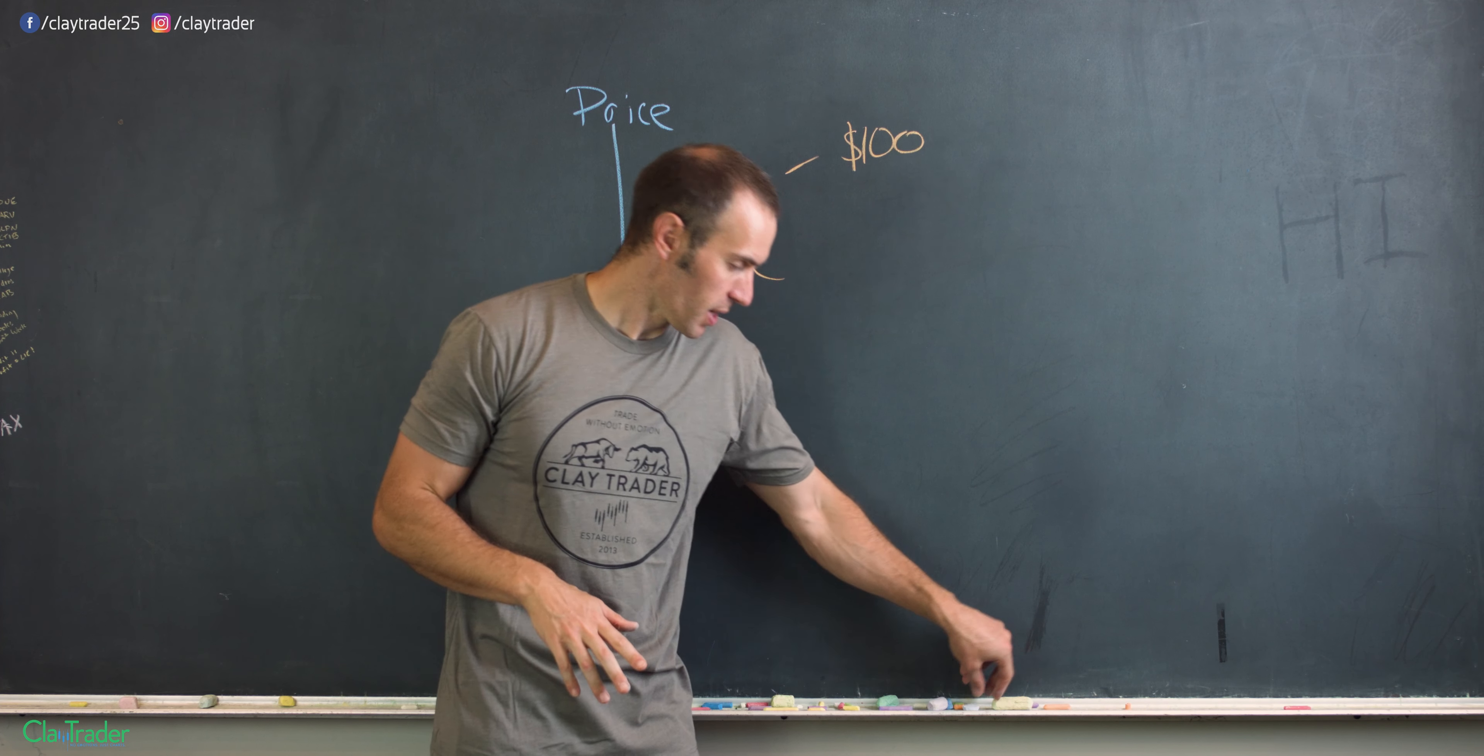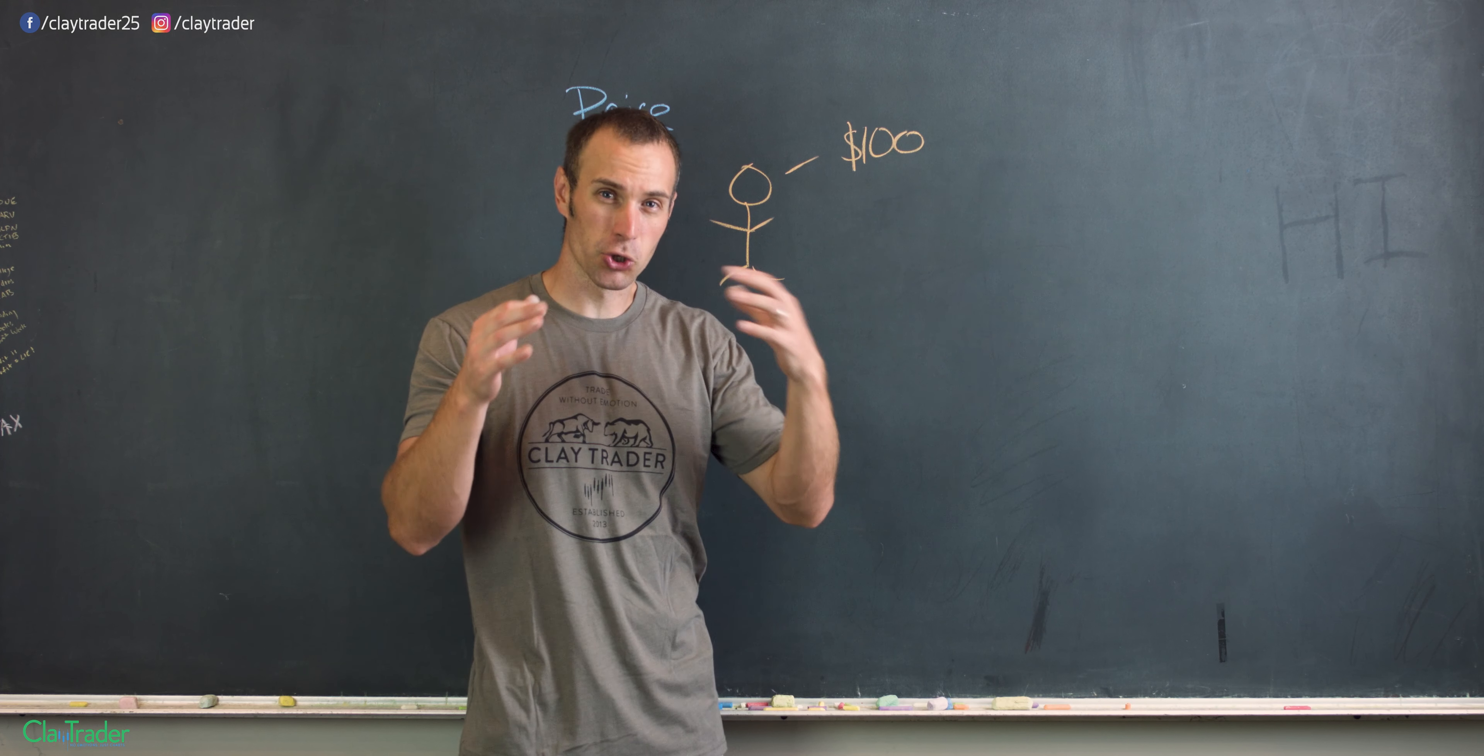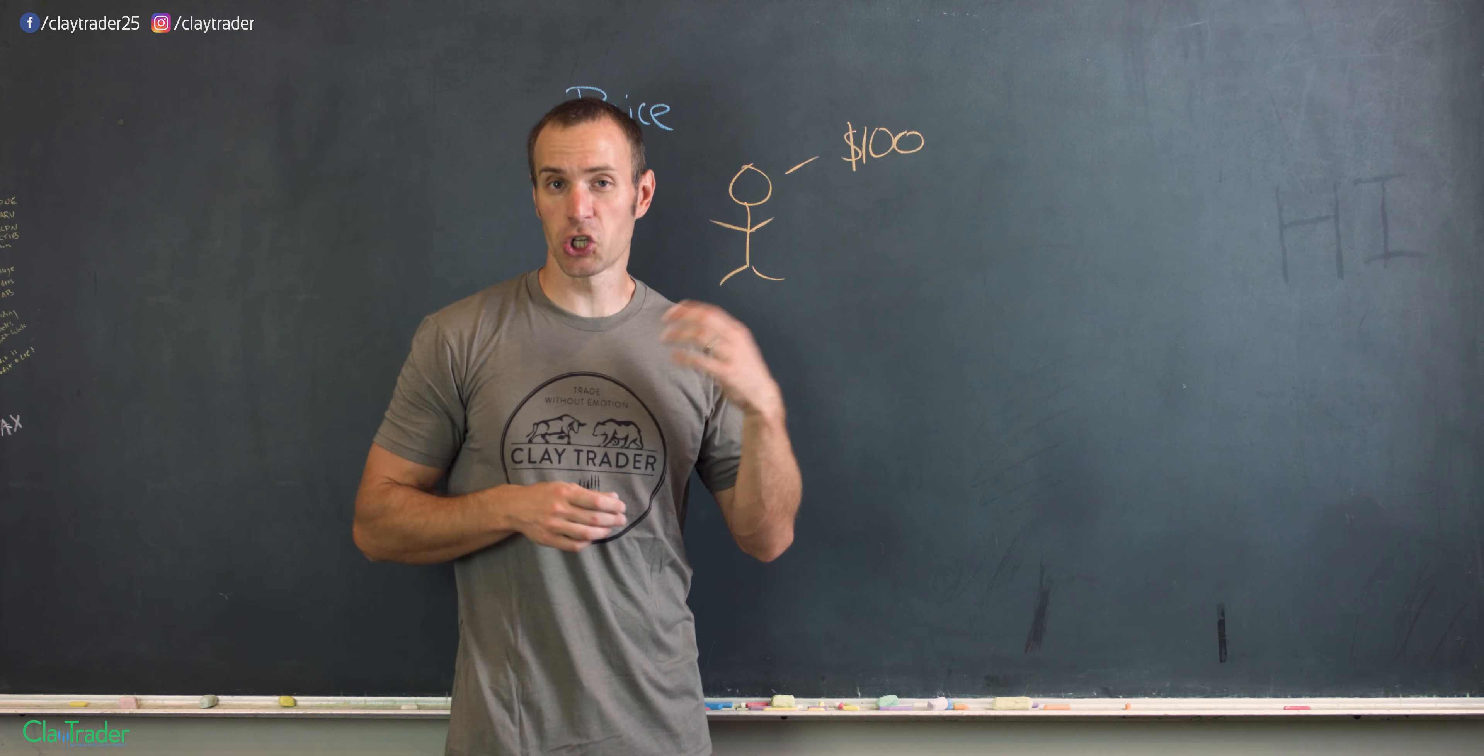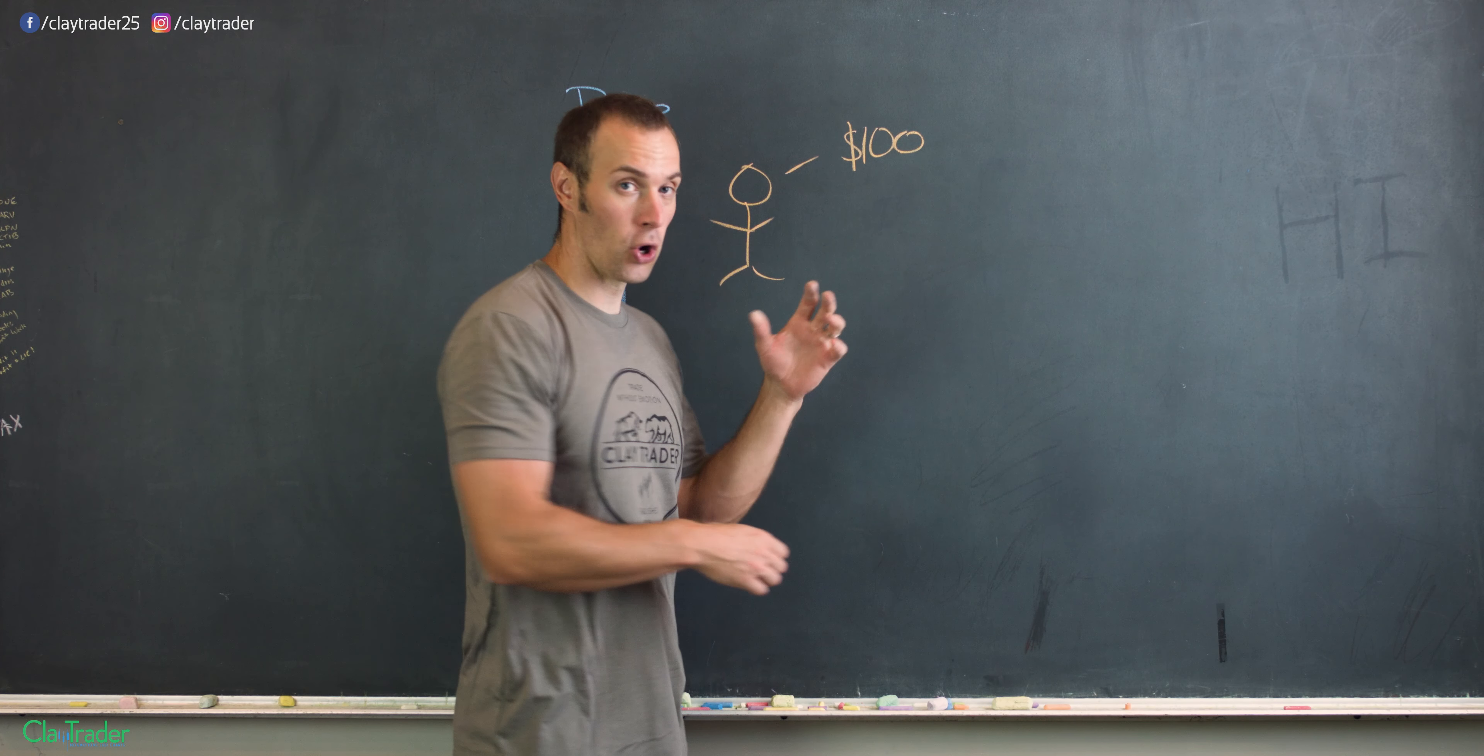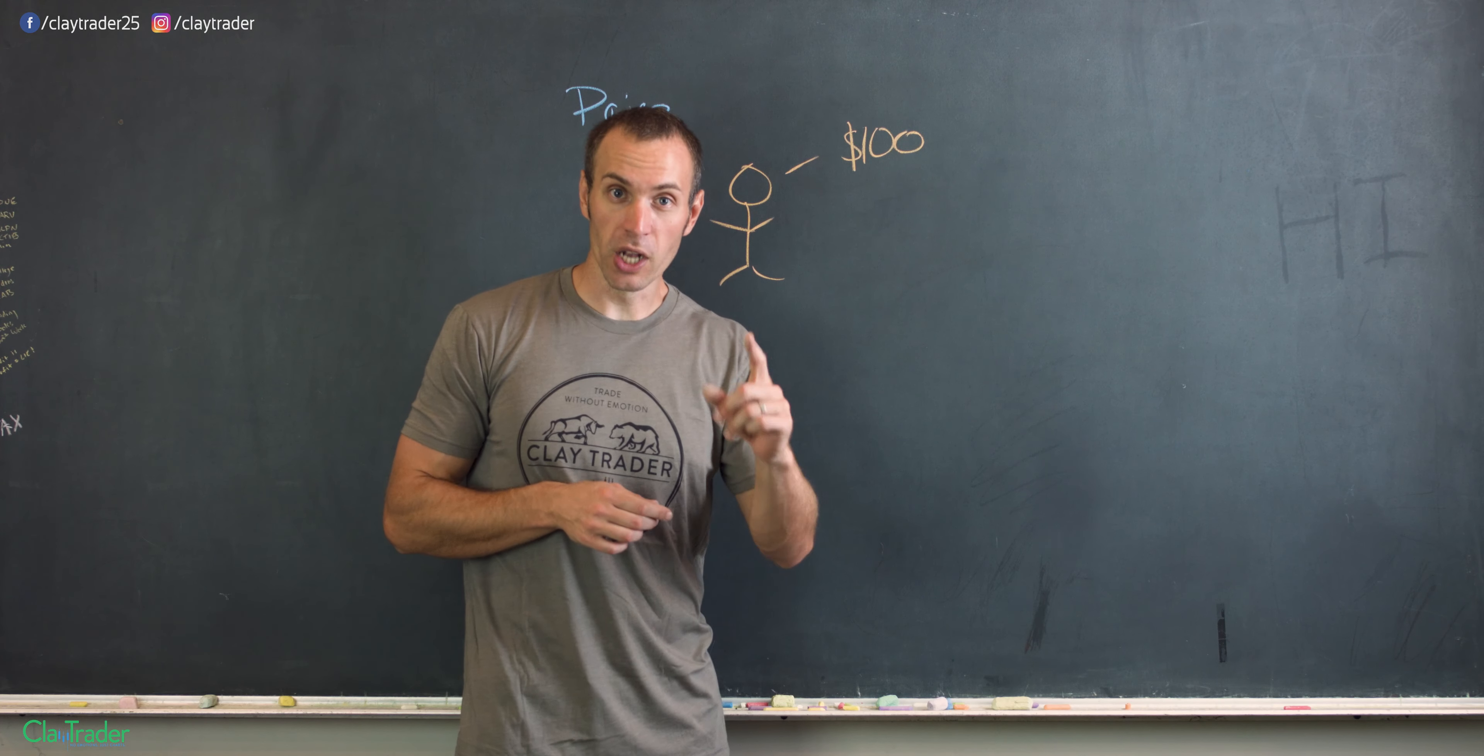So in this situation, just to keep the math easy, let's say John is looking at a stock and says, you know what, it's trading at $100, I want to short one share. So that means that he is going to go out there and actually sell one share for $100.